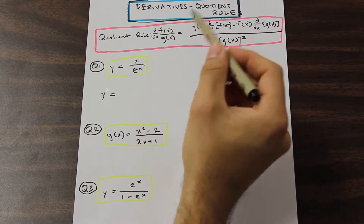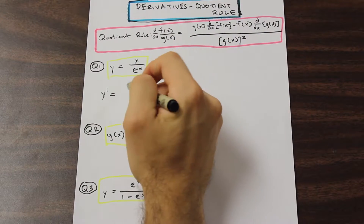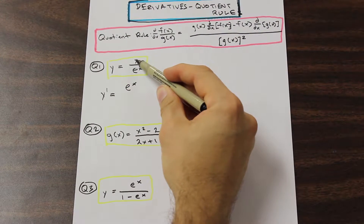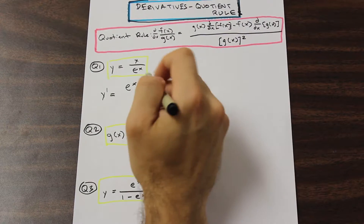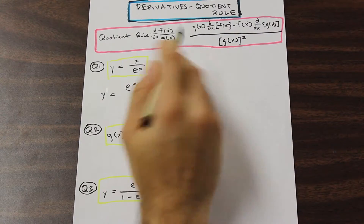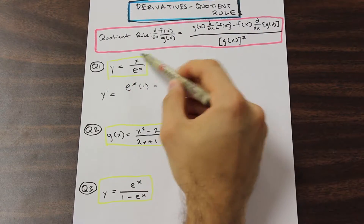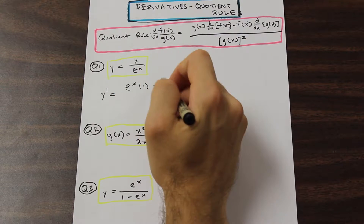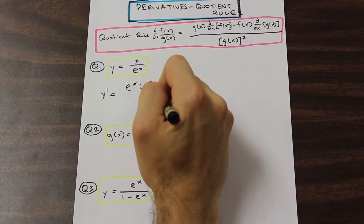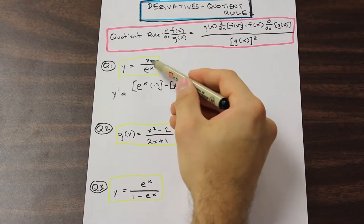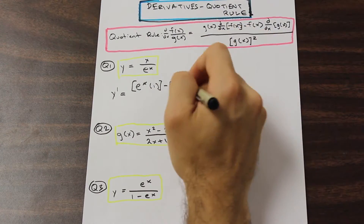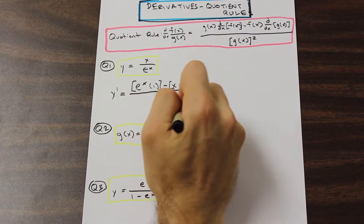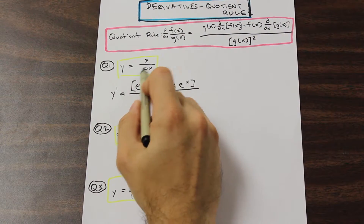So let's follow this. We have g of x, which is on the bottom — we're going to write that first, take that as is, and we're going to multiply that by the derivative of the top. The derivative of x is going to be one. And for the next term, we have f of x times d/dx of g of x. So x times the derivative of g of x, the bottom. The derivative of e to the x is simply e to the x. And that is all divided by e to the x squared.